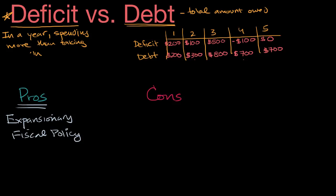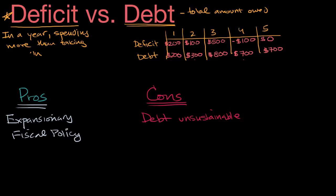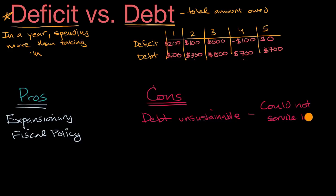The cons are easier to think of. One is that at some point the debt becomes unsustainable. There are definitely examples of other countries that have run such large debts that they could not even service the interest. Whether it's you individually or a government, when you borrow money you have to pay interest. At some point, the interest could become so significant that the government can no longer afford to pay it. And even if a government can pay the interest, that money could have otherwise been used for other things.